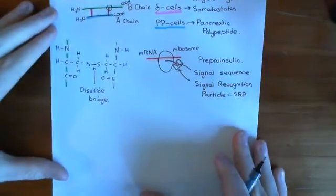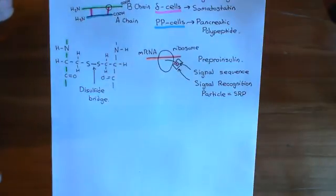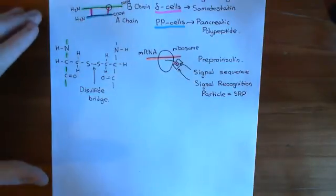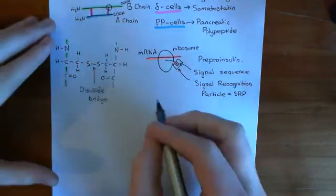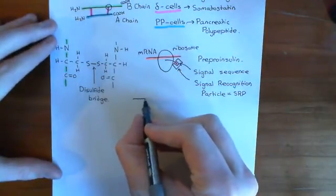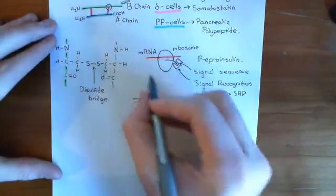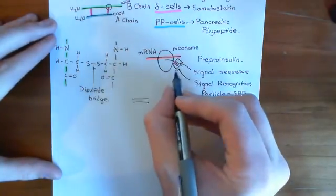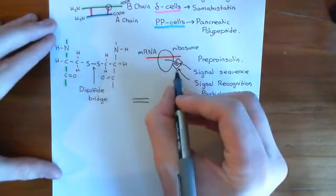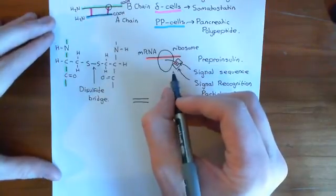The signal recognition particle is going to bind to a receptor on the ER membrane. This entire structure is currently within the cytoplasm, and you want to put it inside the endoplasmic reticulum lumen.